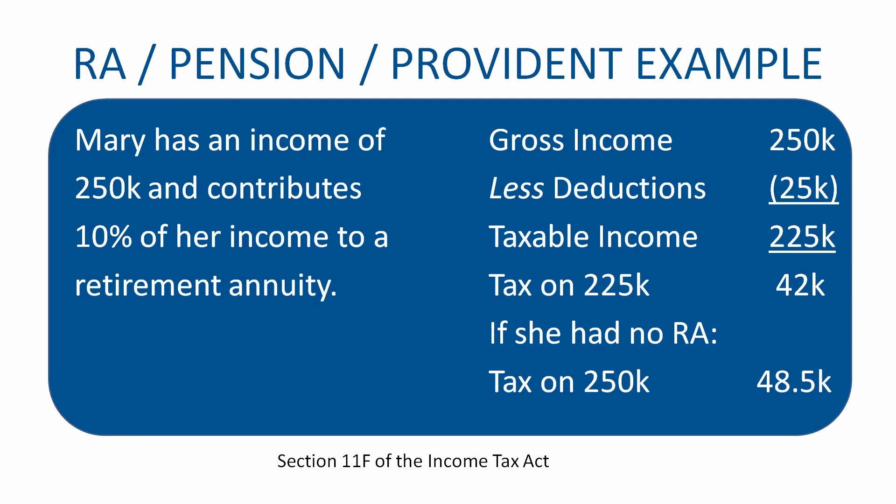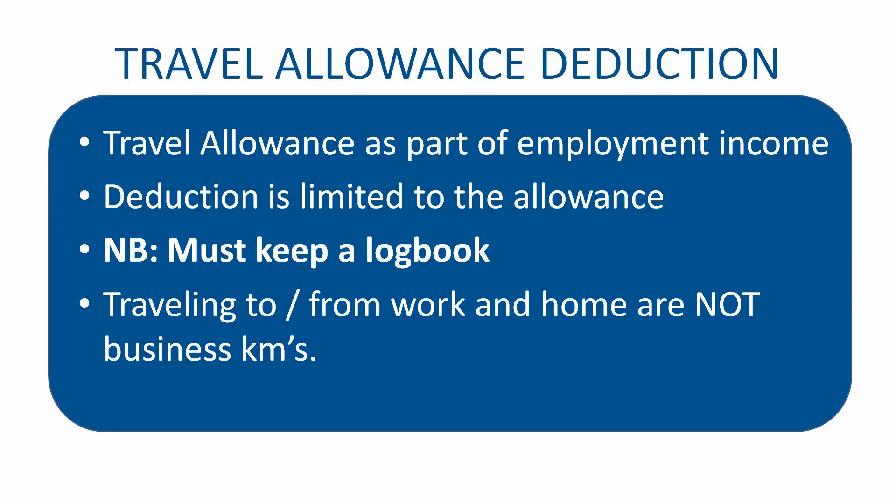With regards to travel allowance, if you receive a travel allowance from your employer as part of your remuneration package — the code on your IRP5 is 3701 — then you can get a travel allowance deduction. However, if you receive a travel allowance of R50,000 for the year, the deduction will be limited to that R50,000. You can't deduct more than the allowance you received.